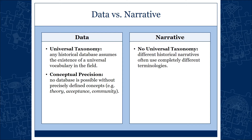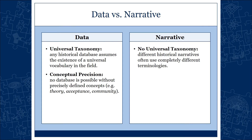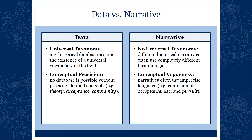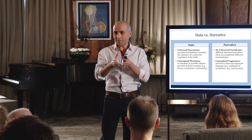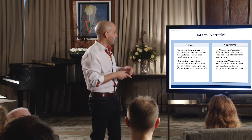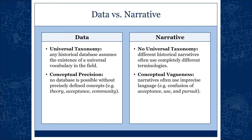Another thing data requires is conceptual precision. No database is possible without precisely defined concepts. What do you mean by 'theory'? What do you mean by 'method'? By 'acceptance'? By 'community'? Nowadays, in our narratives, we have conceptual vagueness — even within the same narrative. It's very difficult to figure out when people talk about acceptance, use, or pursuit — are these the same stance or different stances? Nobody knows.